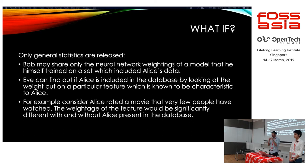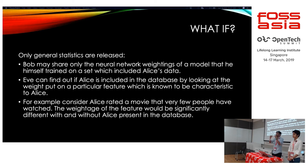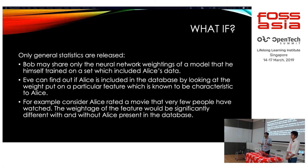In the second case, Bob may share only the neural network weights of a model he trained on the data. Even with just the weights, someone can look at the weights for particular features and identify if Alice's data is included. For example, if Alice rated a movie that very few people watched, the weight of that feature is significantly different with and without Alice in the data. So again, there are ways to find it — not really private. If you know Alice watched a particular movie, there's a lot more you can find out.